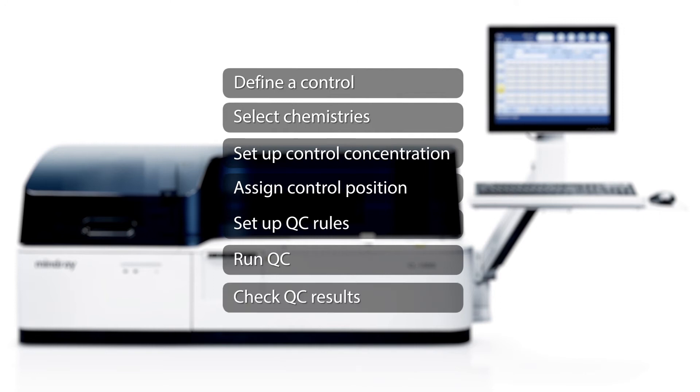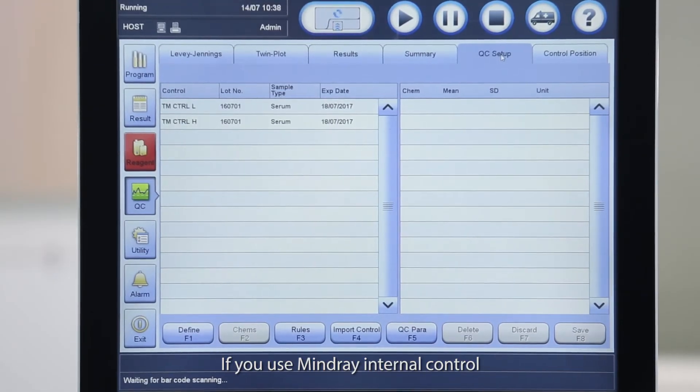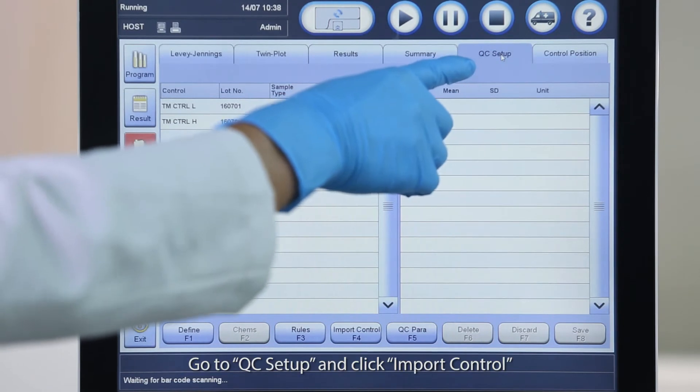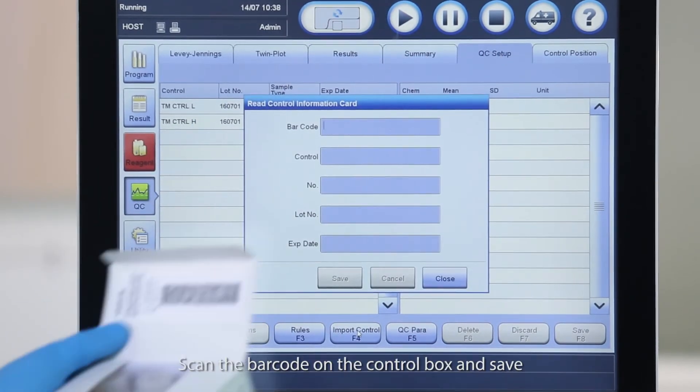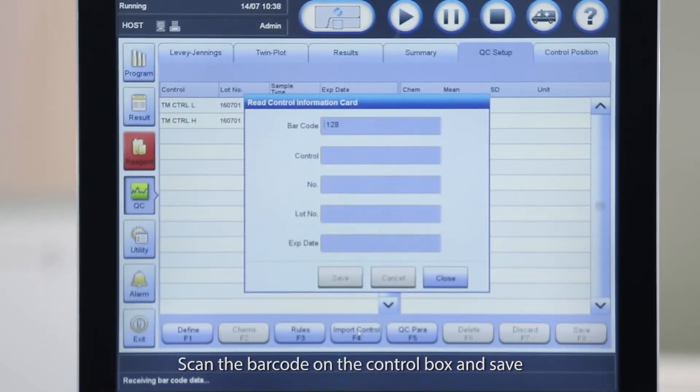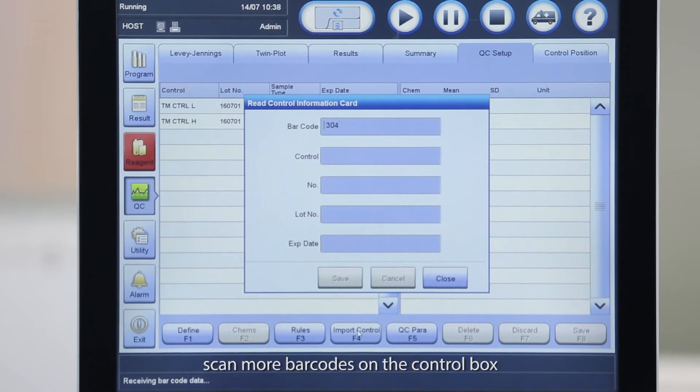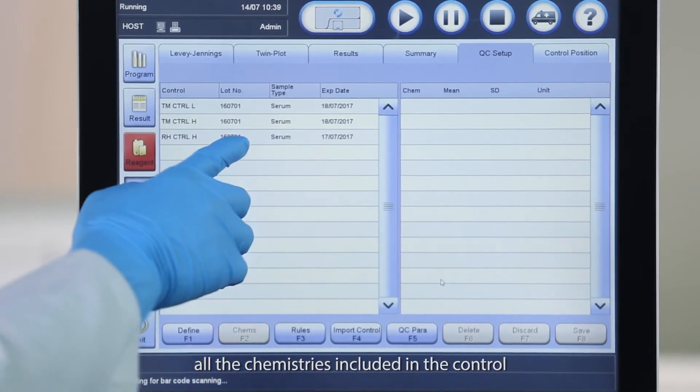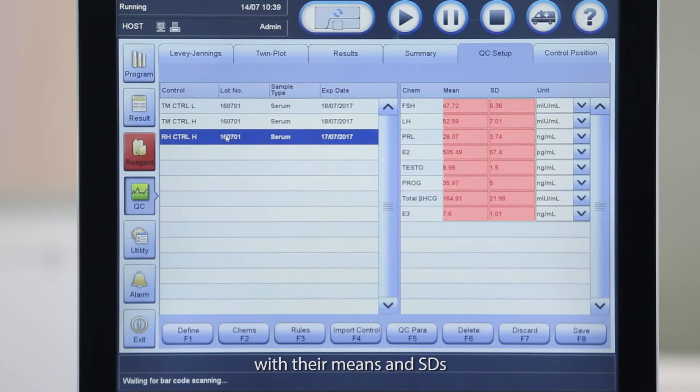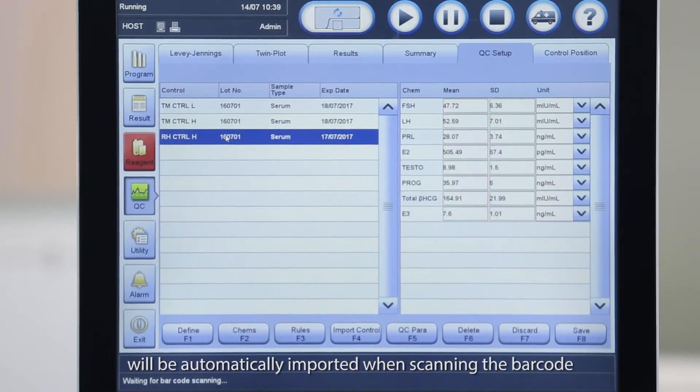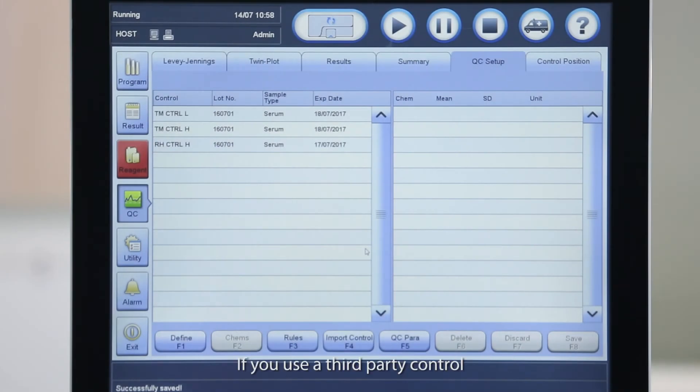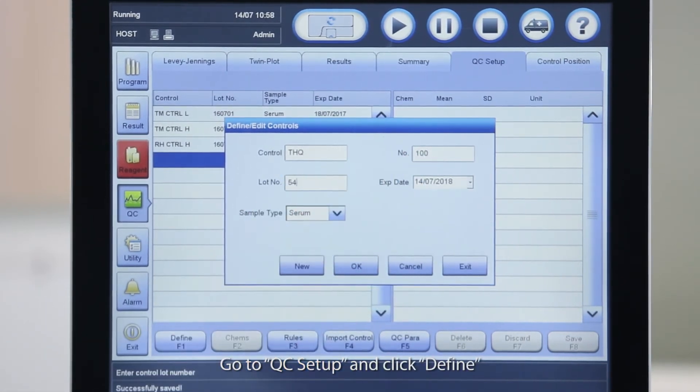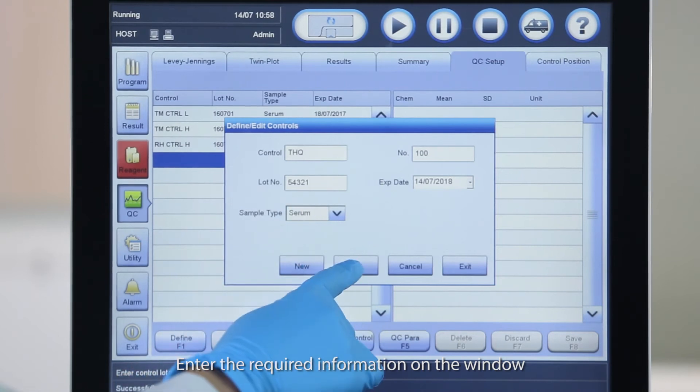If you use Mindray Internal Control, you can define the control by simply importing the QC information. Go to QC Setup and click Import Control. Scan the barcode on the control box and save. To define more controls, scan more barcodes on the control box. For Mindray Internal Control, all the chemistries included in the control with their means and SDs will be automatically imported when scanning the barcode. If you use a third-party control, you can also manually define it. Go to QC Setup and click Define. Enter the required information on the window.